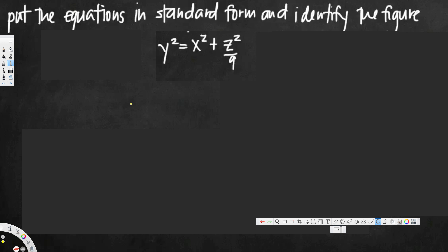Now we are ready to draw our graph. Let's set up our axes: this is our z-axis, this is our y-axis, and this is our x-axis. The cone shape is going to open along the y-axis since we have y² outside of the equal sign.